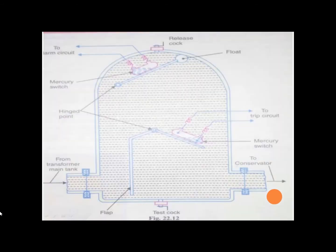Basic construction: this is a simple diagram of a Buchholz Relay. In the upper part, you can see there is a float with a mercury switch attached. There is a flap that will connect. The mercury switch will connect to the trip circuit in the lower part. The mercury switch in the upper part will connect to the alarm circuit.